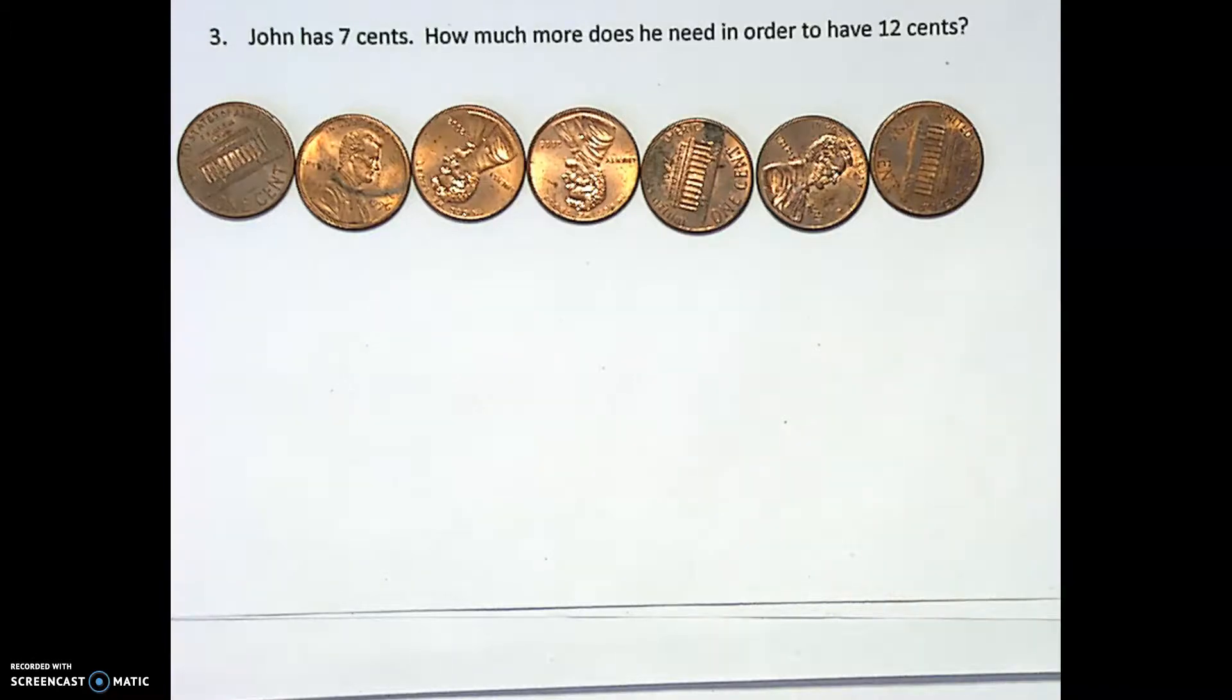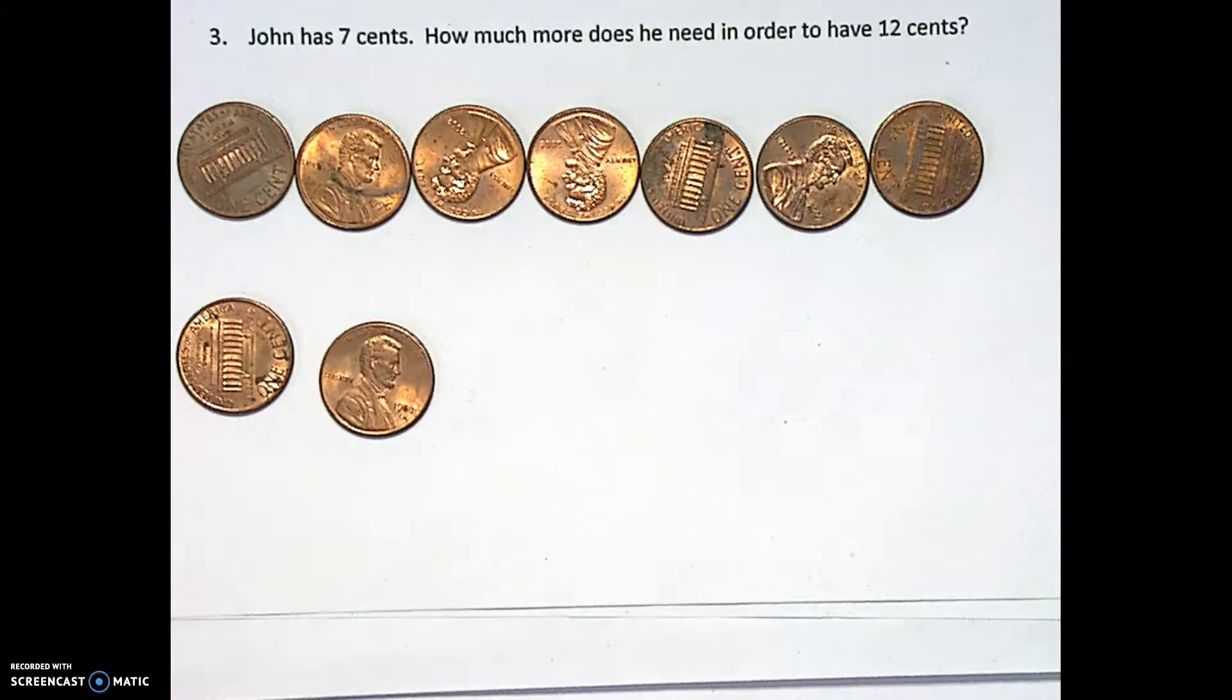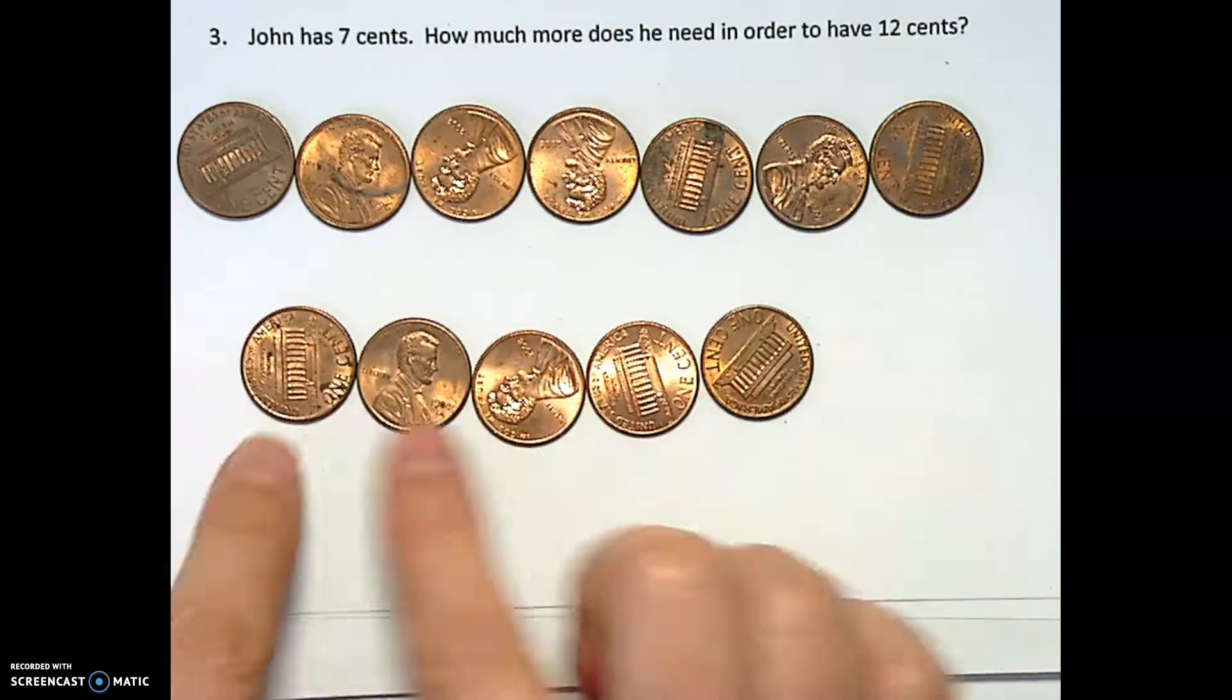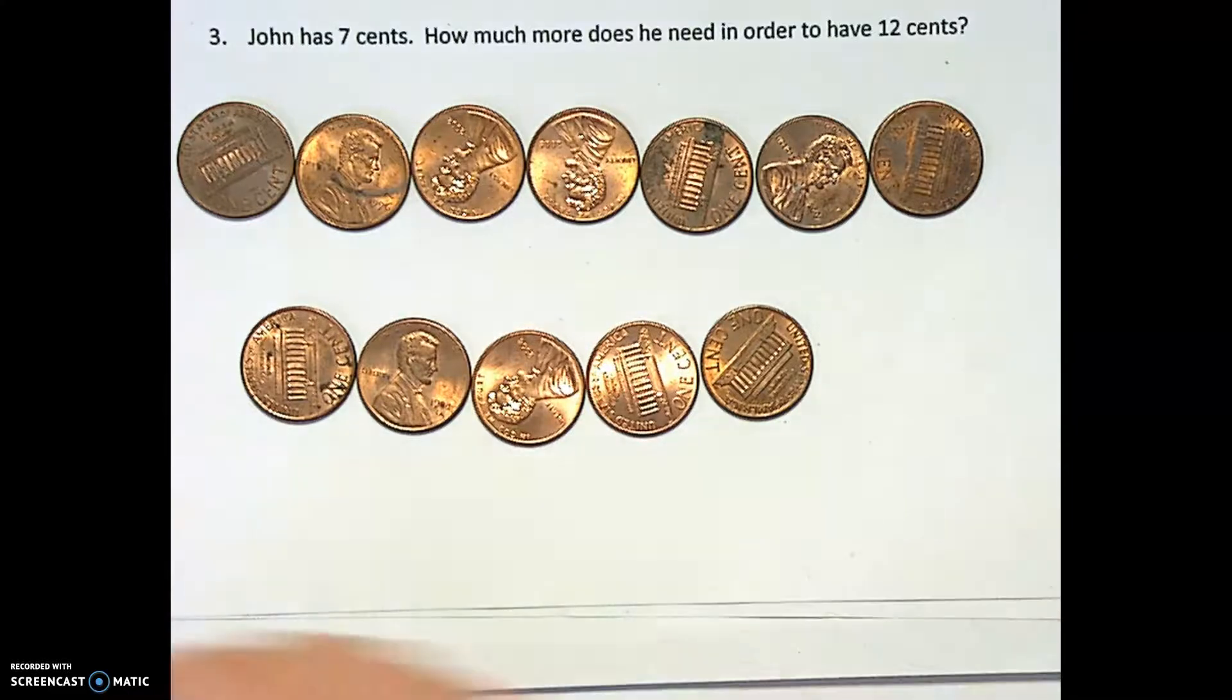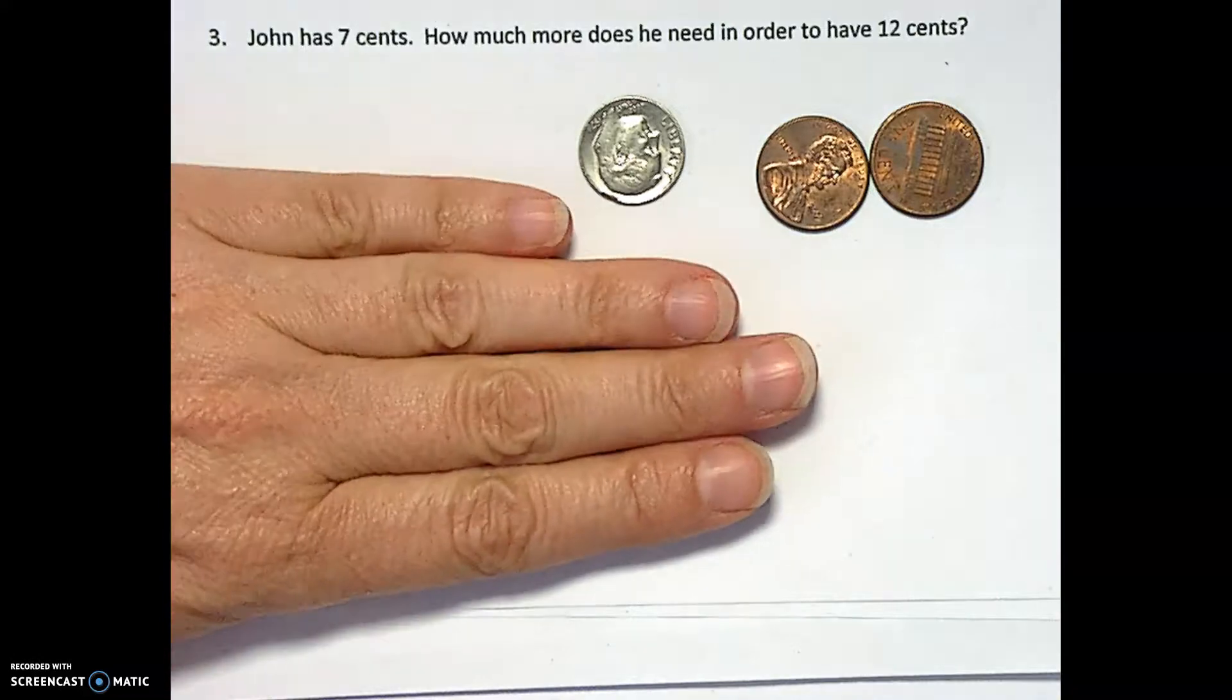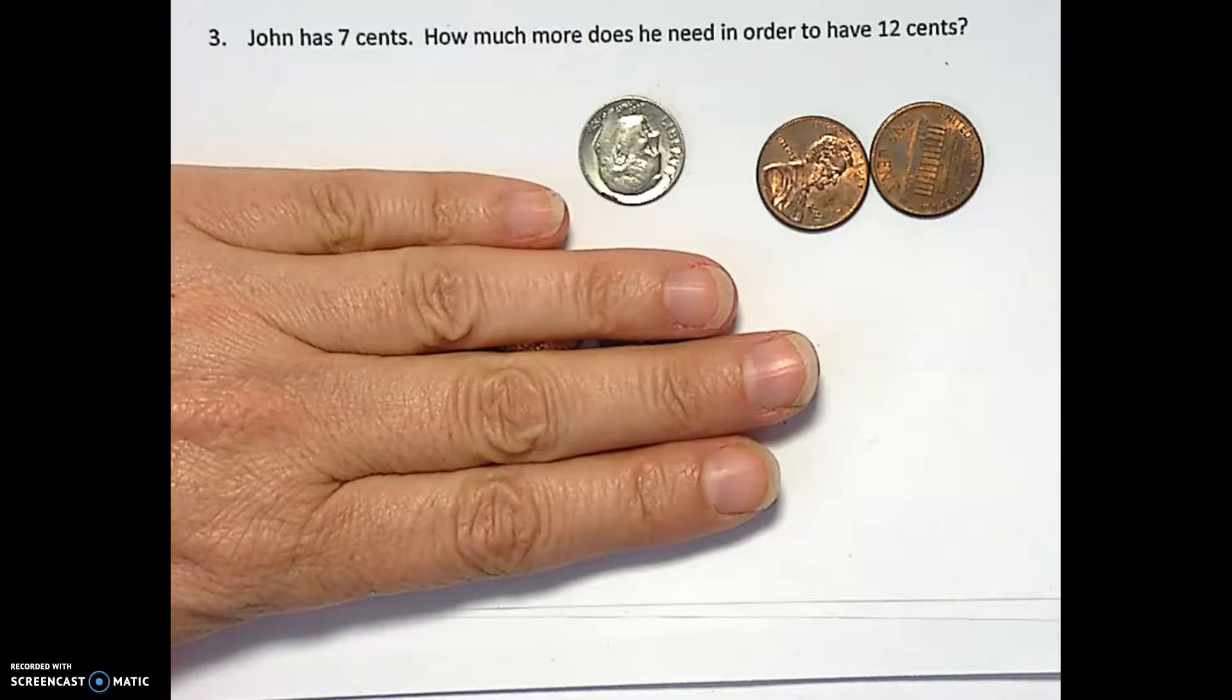So in order to get to 12 cents, we're going to add some to this. So we've got seven. Let's see what we need to add. Eight, nine, 10, 11, 12. So the missing addend here is the five. And once we have that five, we can go ahead and make our exchanges to make it look like the 12 cents that we're looking for. So with that missing addend concept now I'm going to write out the equations for it and we'll talk about other ways to represent it.